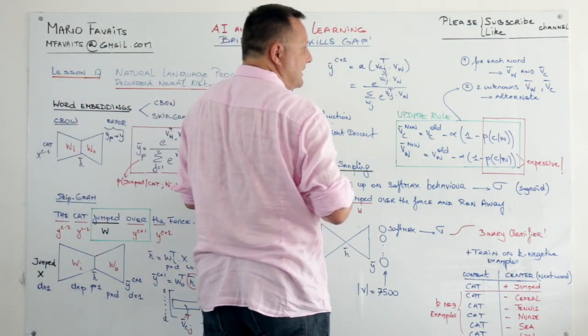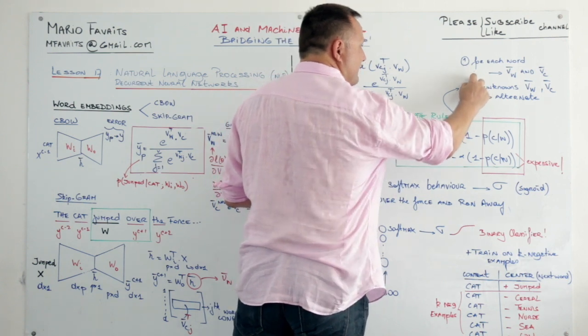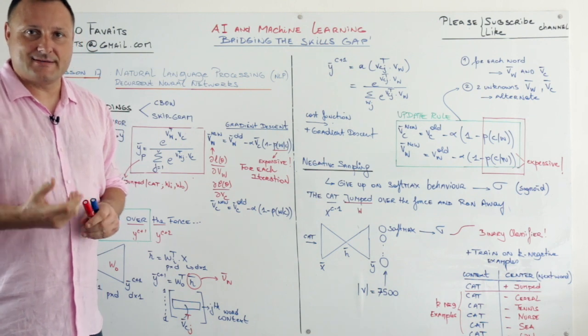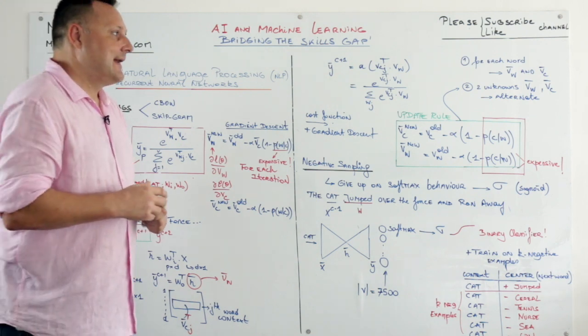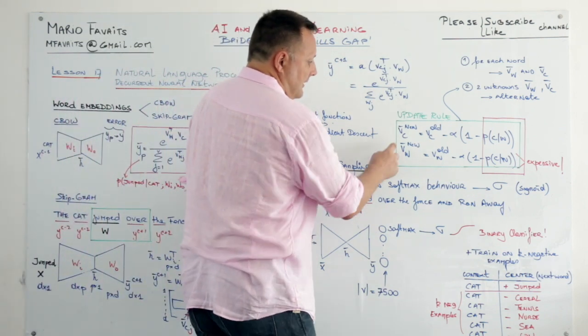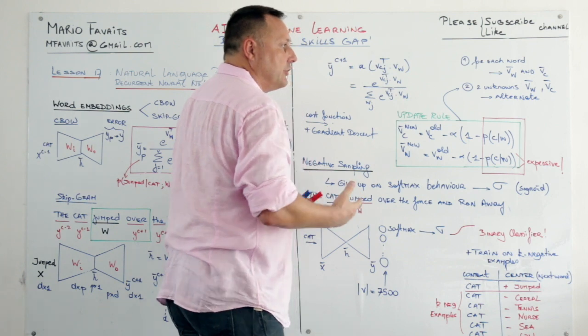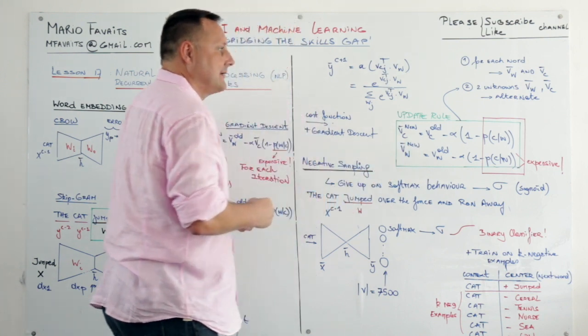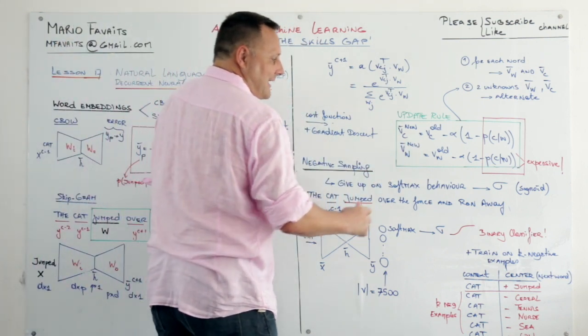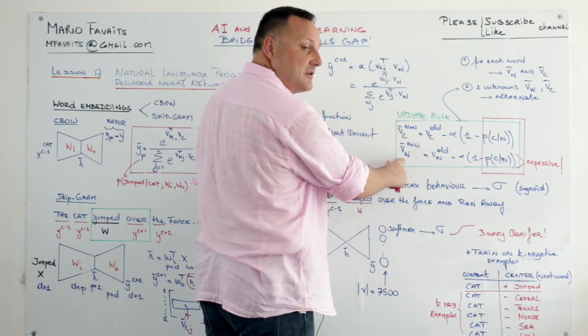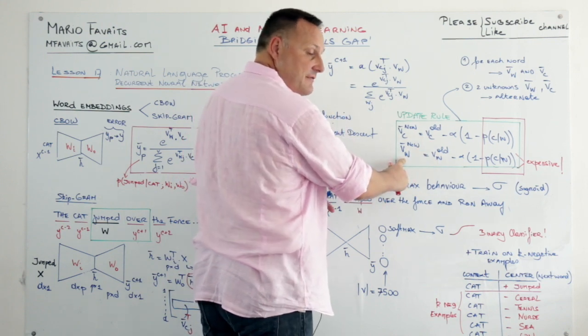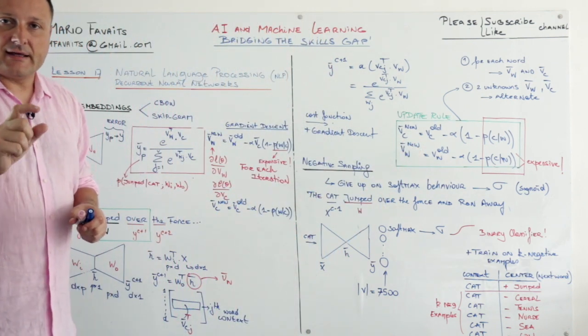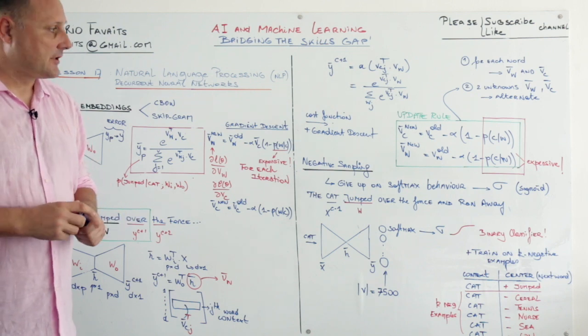Now a few things we need to know. First of all is that every word has a representation as a center word and as a context word. So every word has two vectors. And then you also see that we have two unknowns VW and VC. So in order to run gradient descent on this we will need to alternate. So we can initialize VC and calculate VW. Once we have VW we can calculate the next iteration for VC. And like this we will alternate and converge to the end.